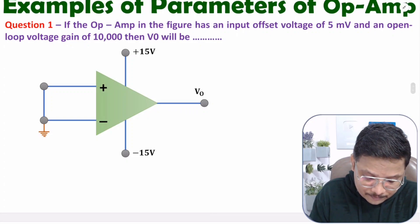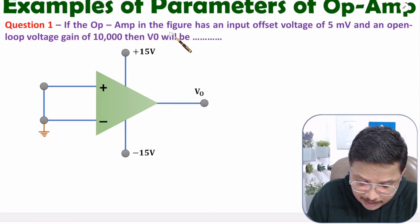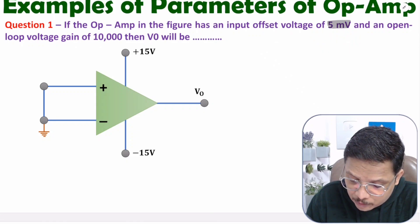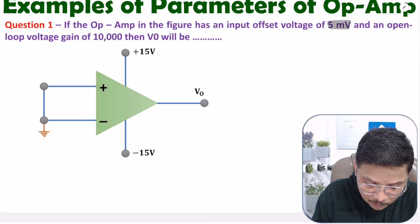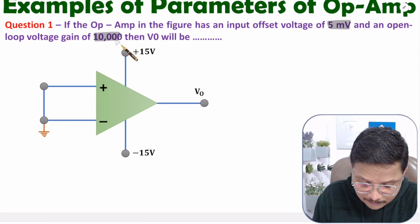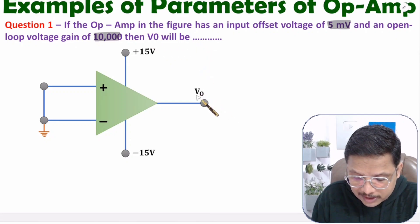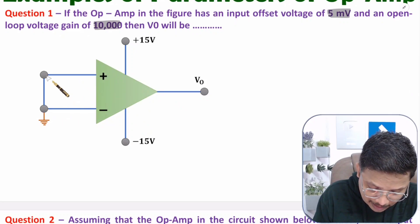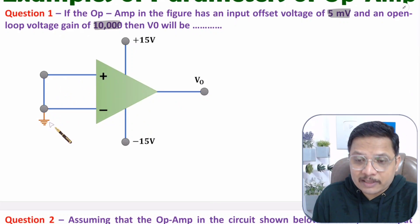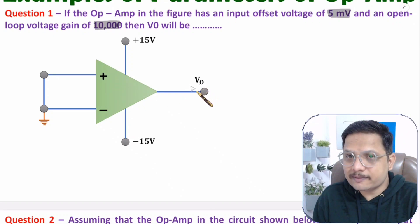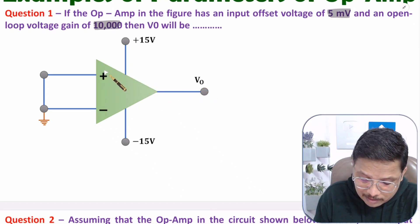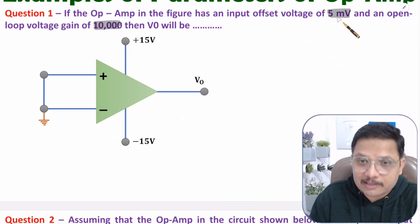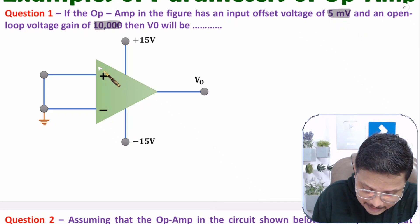In the first question, what is given? If the operational amplifier in the figure has an input offset voltage of 5 millivolt and an open loop voltage gain of 10,000, then V0 will be? If you observe this circuit, both inputs are grounded. With an ideal op-amp, V0 should be zero. But this is not an ideal op-amp — with an ideal op-amp, differential gain should be infinite and input offset voltage should be zero.